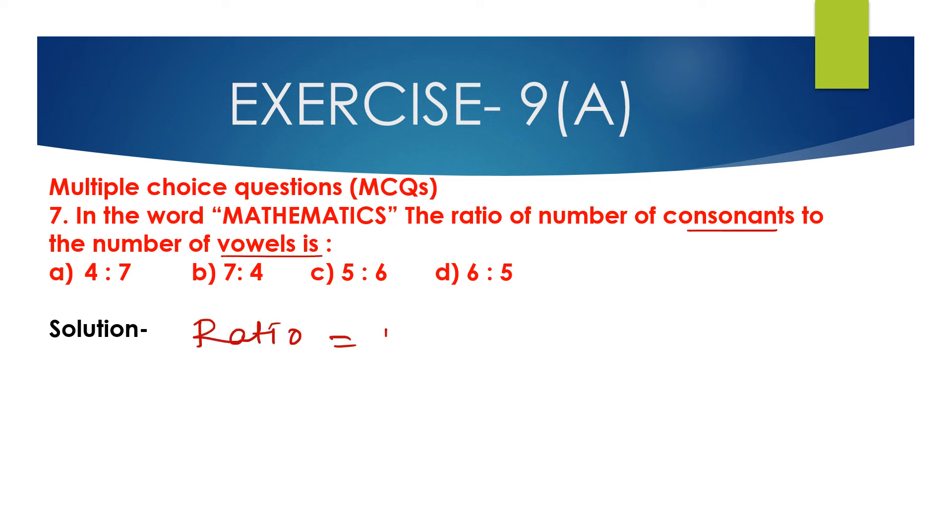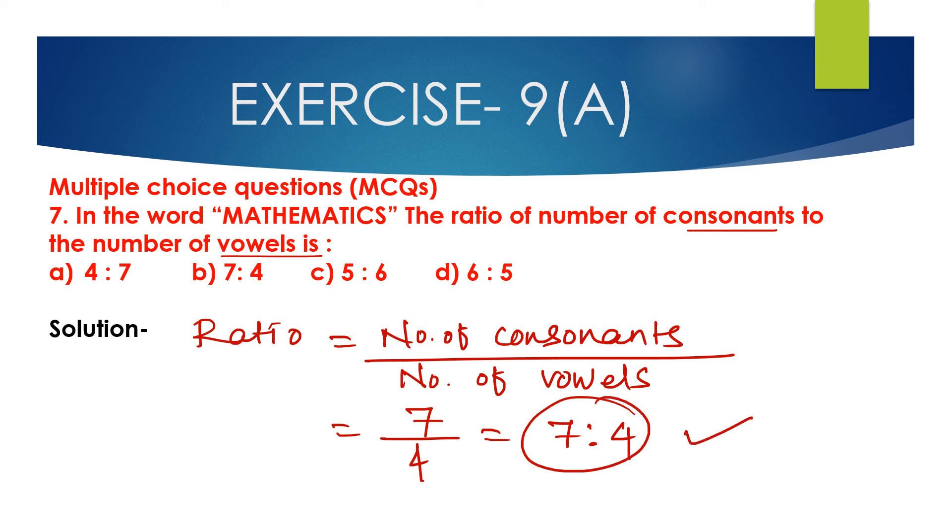Number of consonants divided by number of vowels - number of consonants is 7 and number of vowels is 4. So answer is 7 is to 4. So option B is correct. Option B, 7:4, is the correct answer.